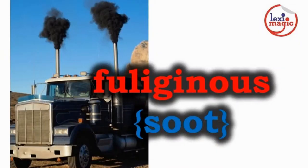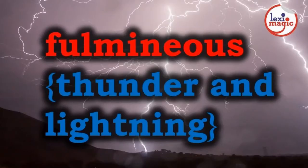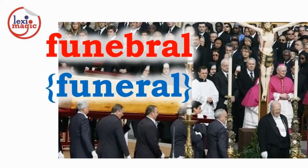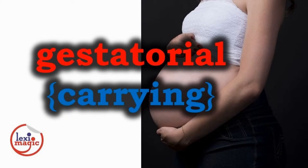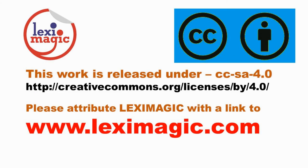Eupeptic means good digestion. Fenestral indicates something related to windows. Fuliginous indicates something related to soot. Fulminous indicates something related to thunder and lightning. Funebral indicates something related to a funeral. Galactic refers to milk. Gestatorial indicates something related to the carrying of a baby in a womb.